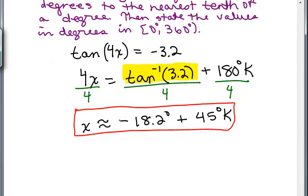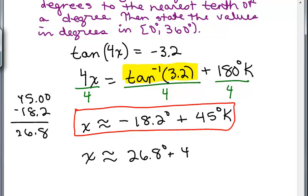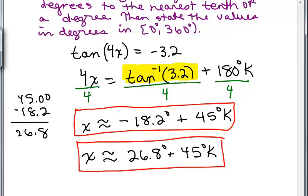Sometimes people like this first number to be positive. So to get the first positive number, you could just go over here and do, well, what is negative 18.2 plus 45? Okay? So you do that. And you could also just do that on your calculator if you add 45, and you're going to get 26.8. So another way you might write this is 26.8 degrees plus 45 degrees K. So either of these really do give you all the solutions to this problem, tangent of 4X equals negative 3.2.